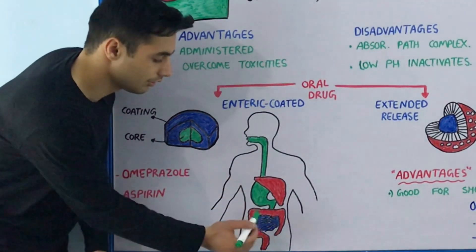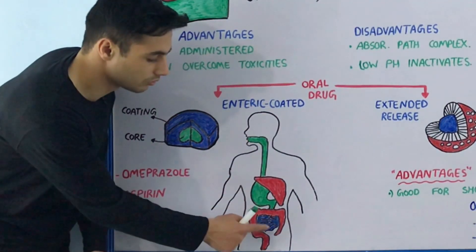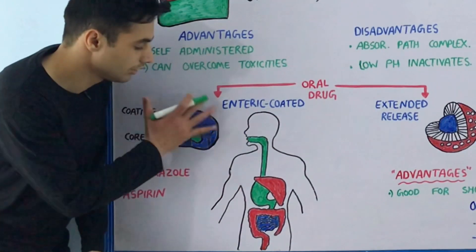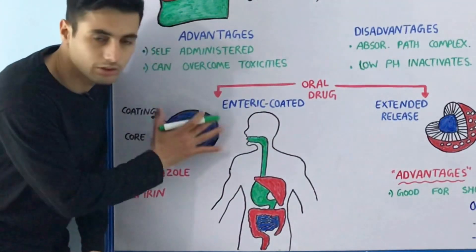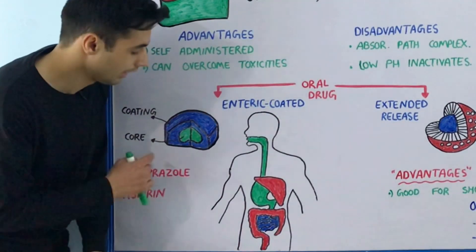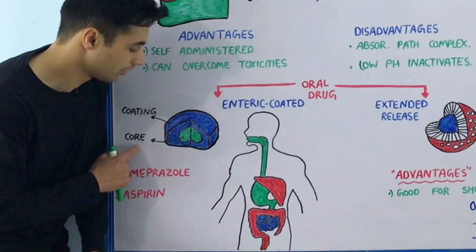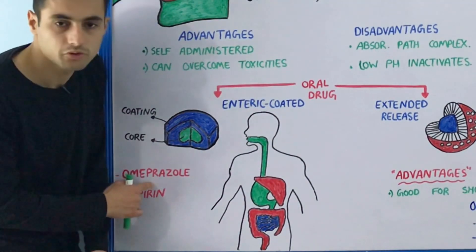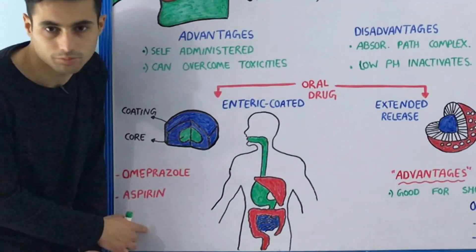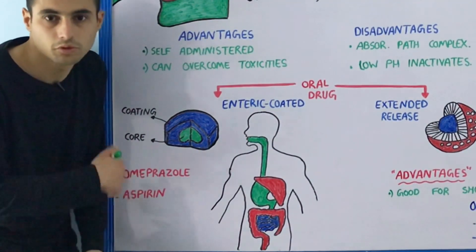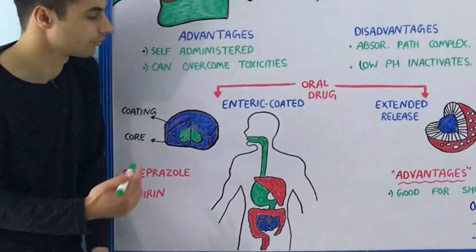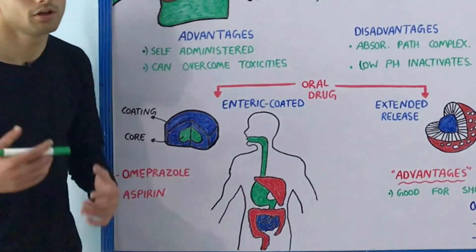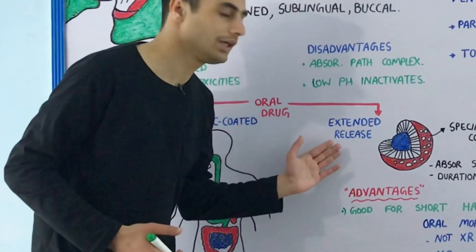Eventually, when this medication reaches the small intestines, the chemical coat is dissolved and the drug is released. The examples of enteric coated medications are omeprazole and aspirin.